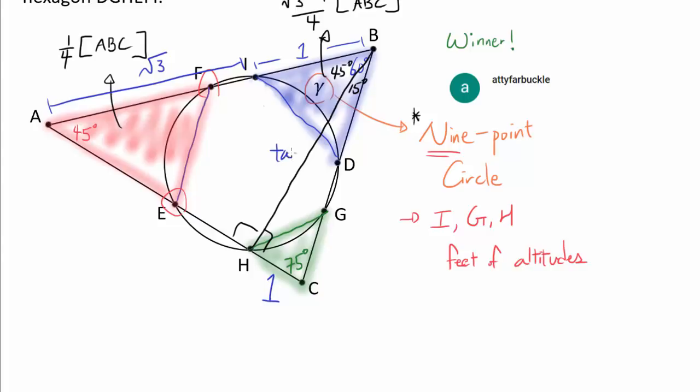If we think of CH as being 1, we know this BH is going to be tangent of 75 degrees because opposite over adjacent. And that's telling us that AH because of 45-45-90 is also tangent of 75.